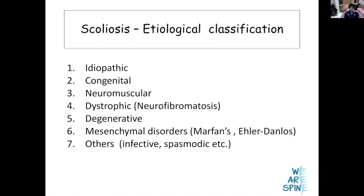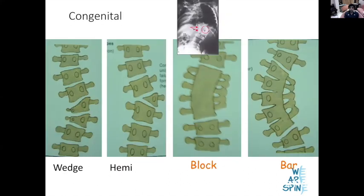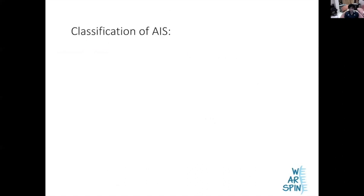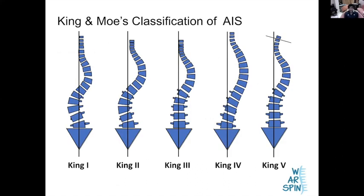When classifying scoliosis, there is dystrophic scoliosis — typically neurofibromatosis — and degenerative scoliosis. For the King's classification, a simple trick: Types 1 and 2 are thoracic and lumbar double curves — in Type 1, thoracic is small and lumbar is big; in Type 2, thoracic is big and lumbar is small. Types 3 and 4 are C-shaped curves — in Type 3, L3 is in the midline; in Type 4, L3 is outside the midline. Type 5 is a double thoracic curve. It's quite easy to remember.